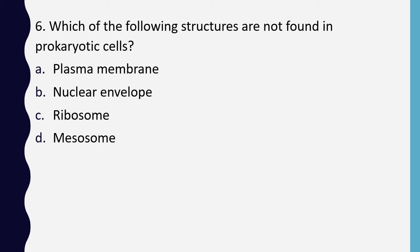Question 6. Which of the following structures are not found in a prokaryotic cell? Plasma membrane, nuclear envelope, ribosomes, or mesosomes. Correct answer is option B: nuclear envelope.